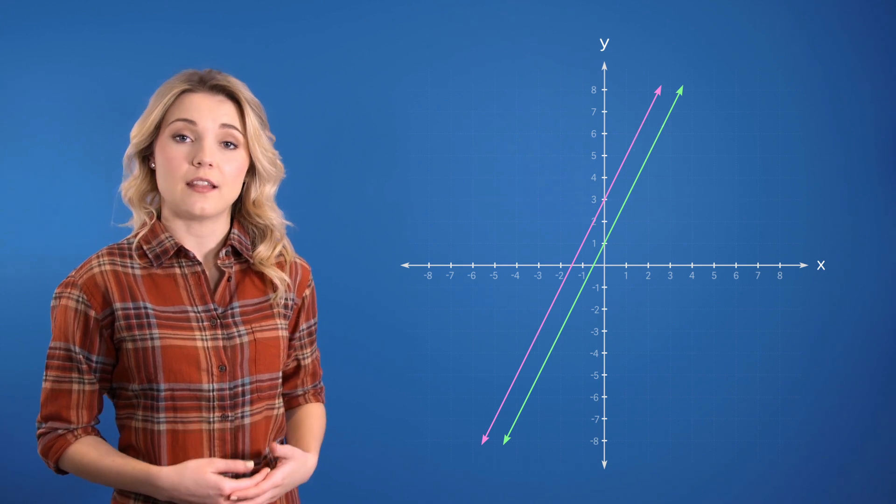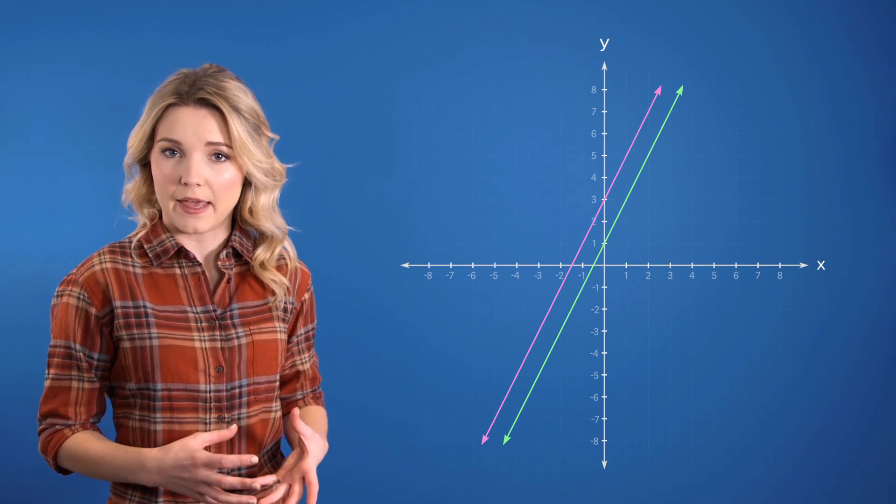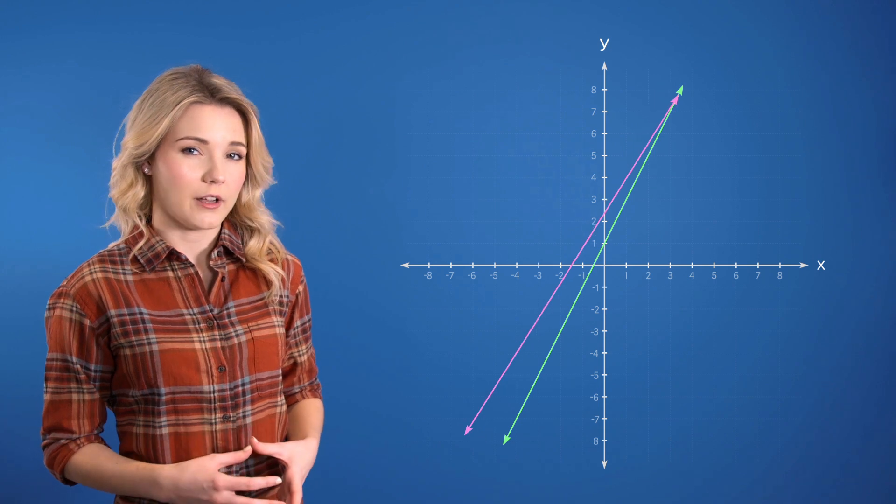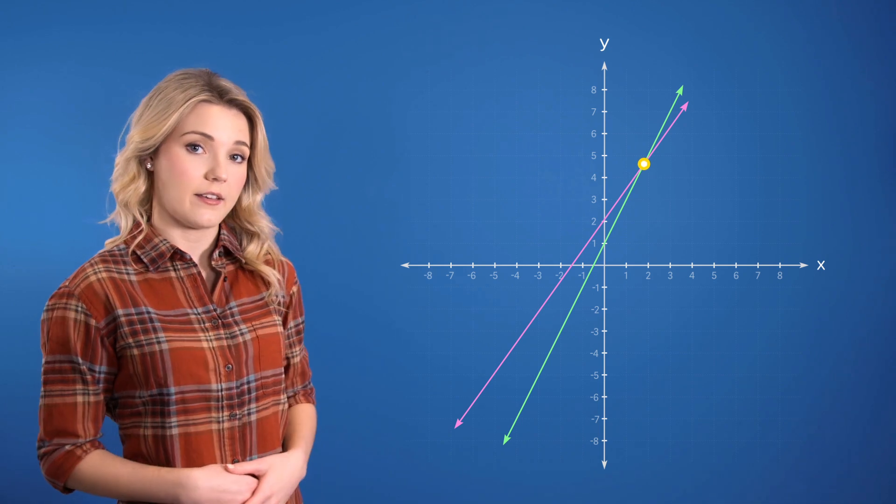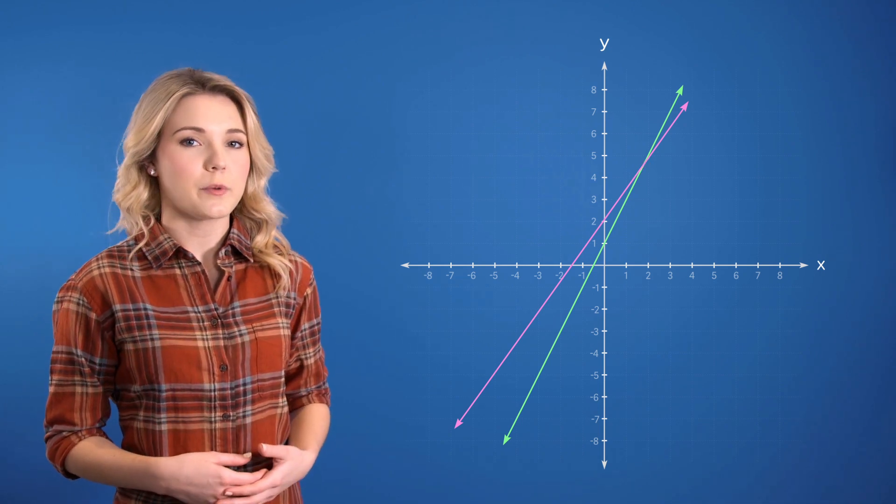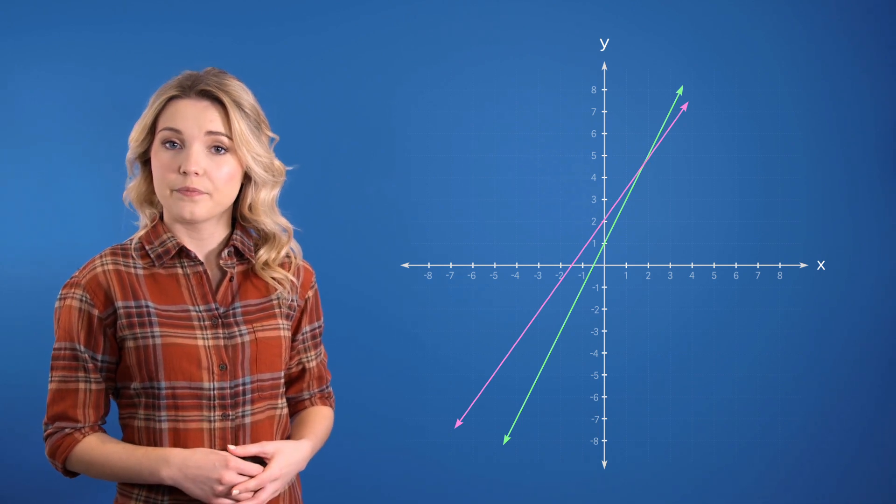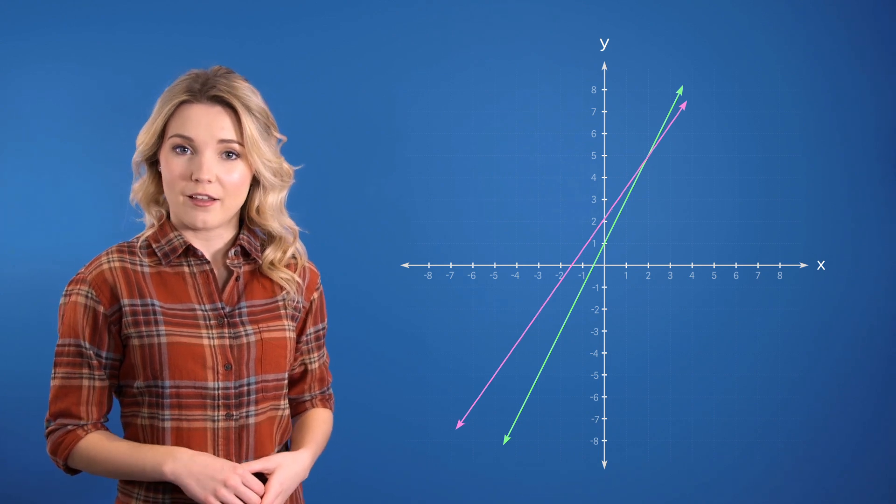After all, if we took one of these lines and then changed the slope a bit, making it a little smaller, then it's only a matter of time before this line will cross the other line. Of course, this would make the two lines not parallel. So let's make those lines parallel again.